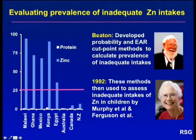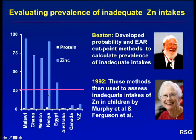In order to evaluate the prevalence of inadequate intakes of zinc, we first used the probability approach developed by George Beaton in the 1970s to calculate the prevalence of inadequate intakes in Malawi and Ghana. The probability approach was also used by Susanne Murphy and colleagues for Mexico, Kenya and Egypt in the Nutrition CRISP study. Later, we adopted the EAR Cutpoint Method — also developed by George Beaton in the 1990s — to evaluate the prevalence of inadequate intakes of children from Australasia and Canada. Applying the iZinc trigger level, it is the children in low-income countries that have a very high prevalence of inadequate zinc intakes.